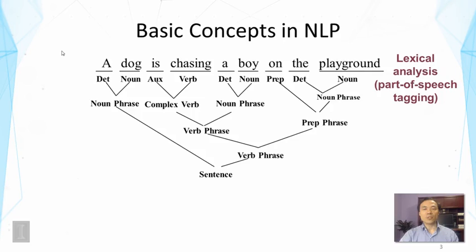After that, the computer also needs to figure out the relations between words. So 'a' and 'the dog' would form a noun phrase, 'on the playground' would be a prepositional phrase, etc. There is a certain way for them to be connected together to generate meaning, and some combinations may not make sense. This is called syntactic parsing or syntactic analysis. The outcome is a parse tree that you are seeing here, which tells us the structure of the sentence and how we can interpret it.